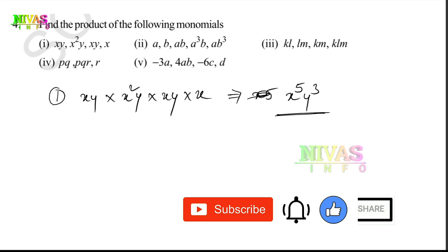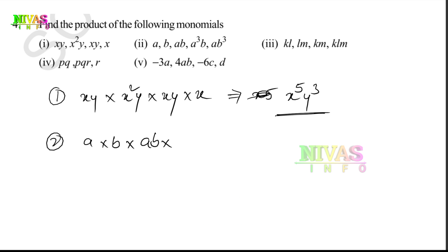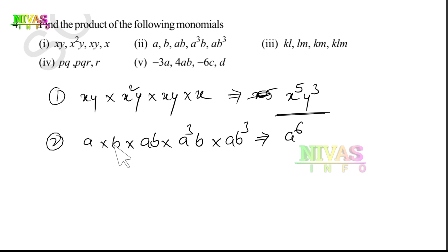Second one: A into B into AB into A³B into AB³. Counting A: 1, 2, 3, 5, 6 — A to the power of 6. Counting B: 1, 2, 3, 3, 6 — B to the power of 6. So the answer is A⁶B⁶.